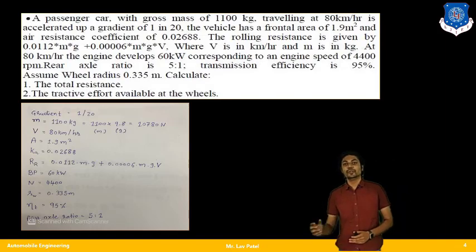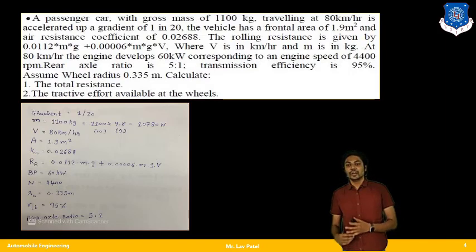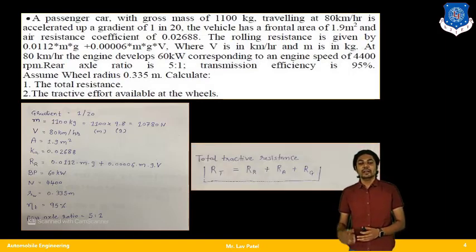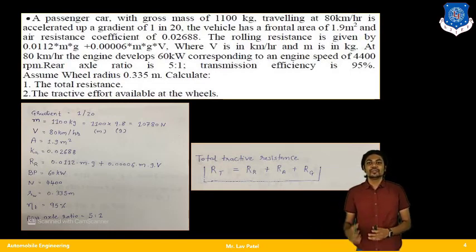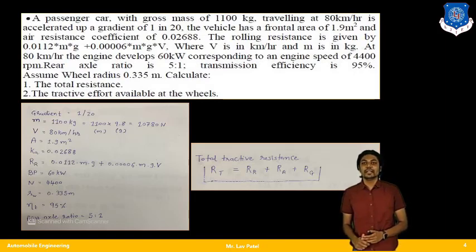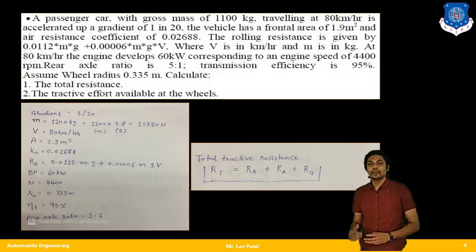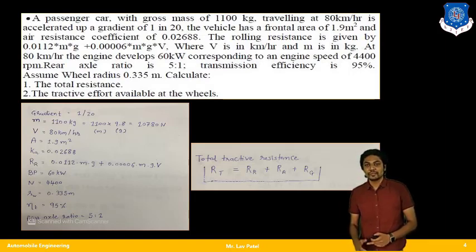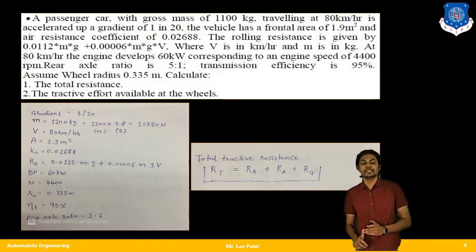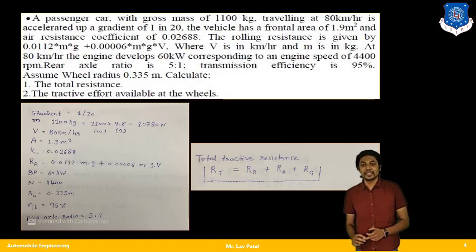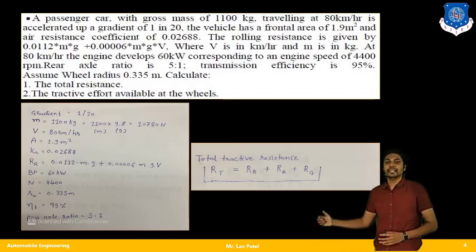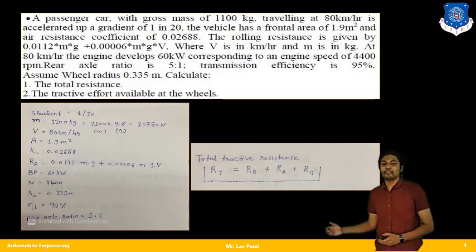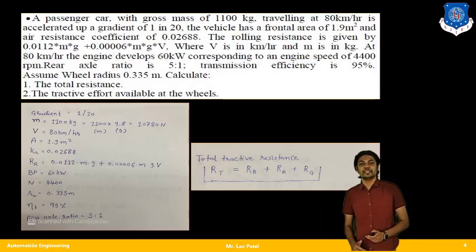From this data we need to find: first, the total resistance due to gradient resistance Rg, rolling resistance Rr, and air resistance Ra — so three resistances combined. Second, the tractive effort available at the wheel to overcome that total resistance. The total tractive resistance RT is the sum of all three resistance components.